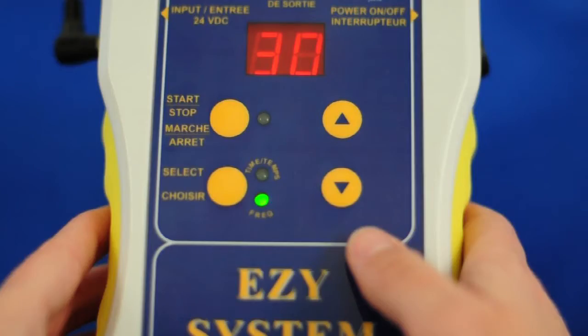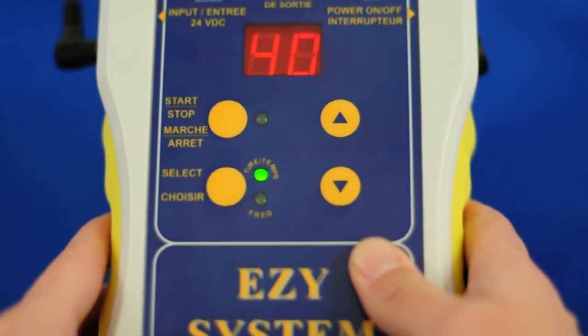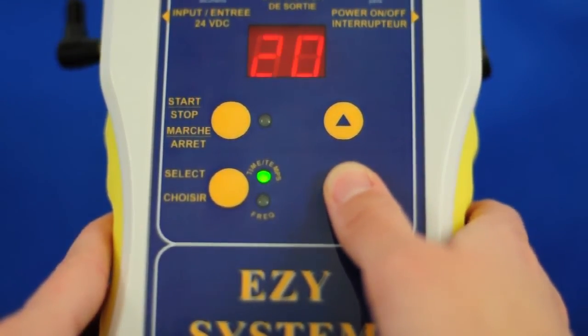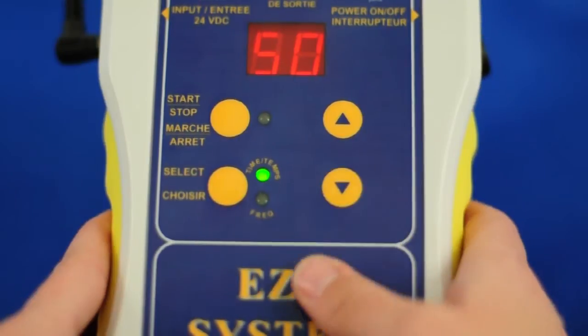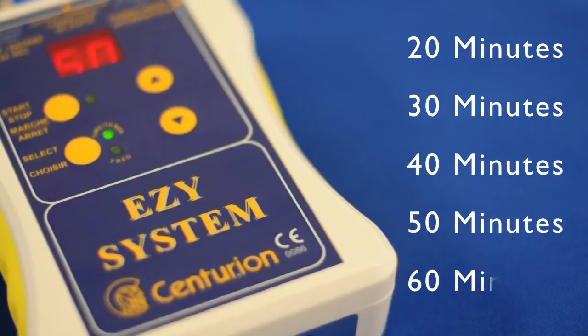Two numbers will appear on the display. To choose the length of your treatment, press the select button. A green light will appear under the time heading, allowing you to adjust the time to increase or decrease your treatment length. There are five times to choose from: 20, 30, 40, 50, and 60 minutes.